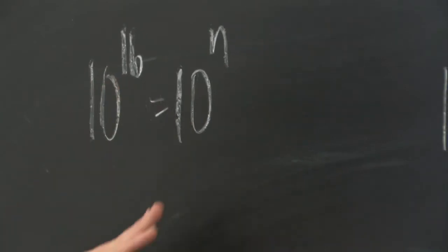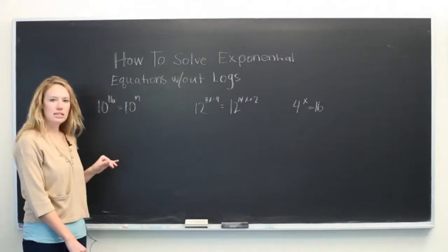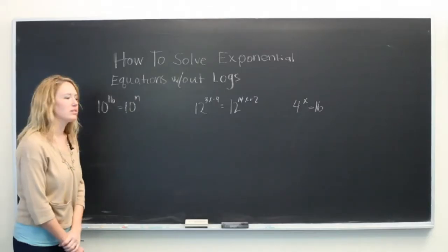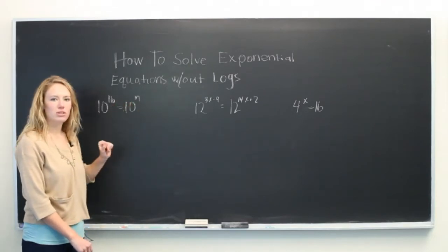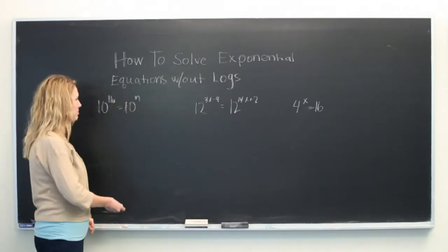So we see 10 to the 16th is equal to 10 to the n. 10 is our base and both of these are the same. So what we can do is take the exponentials and just rewrite them as their own separate equation.